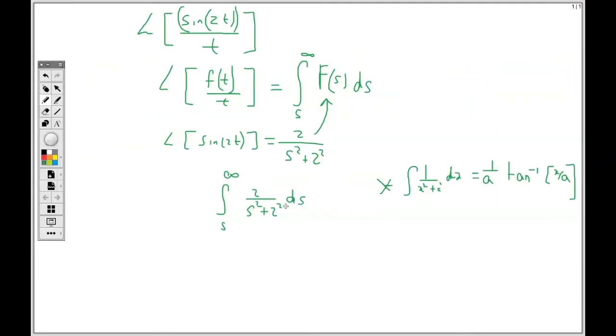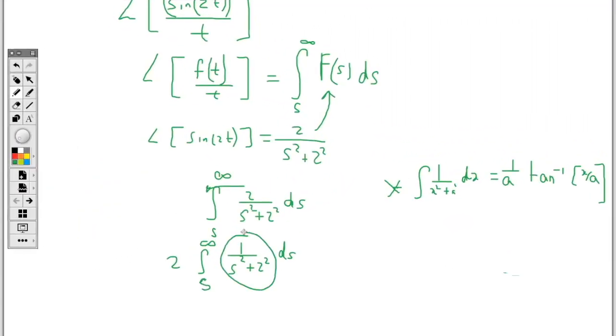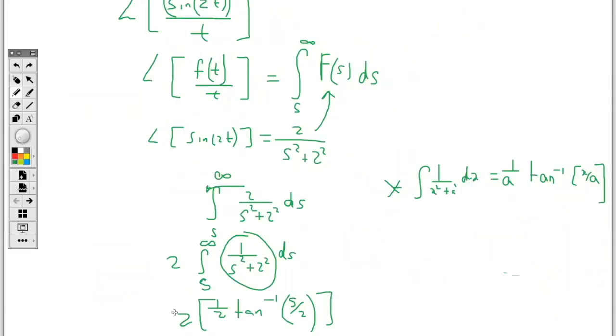So this is going to give us a tan inverse function based on this. So integrating this, because of the 2 I can factor it out so that I have 1 in the numerator. So I have 2 integral from s to infinity, 1 over s squared plus 2 squared ds. And when we integrate this part, it's going to give us, so the tan inverse of this will be, so I have 2 but this will become a half tan inverse of s over 2, of course plus c, but because I have boundary I will no longer put that.